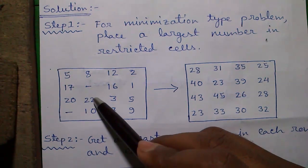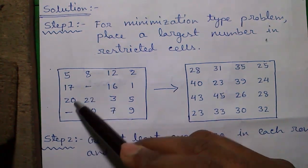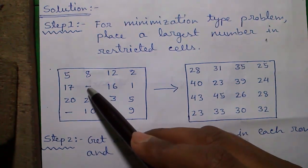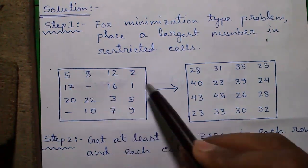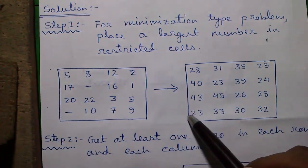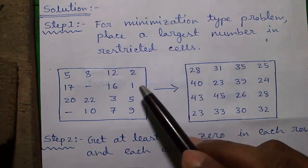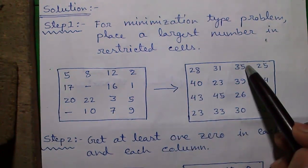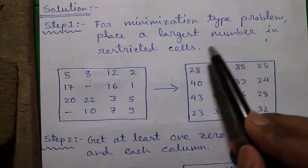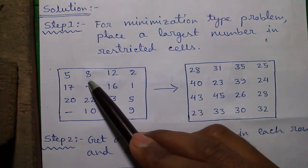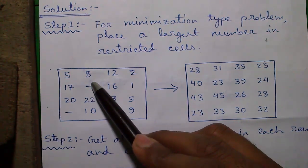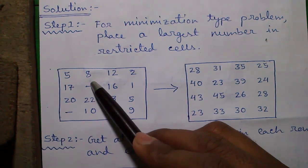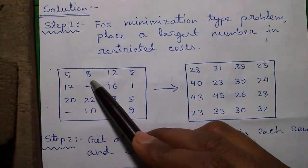So we will just add a number bigger than this number in these cells. So we can take 22 plus 1 is 23. We can place 23 in this location and this location, so we will get our new matrix. Remember in minimization type problem we will add a largest number, but in maximization type problem we will add a smallest number. You can check out my video about maximization type problem on my YouTube channel. Link is given in the video description.